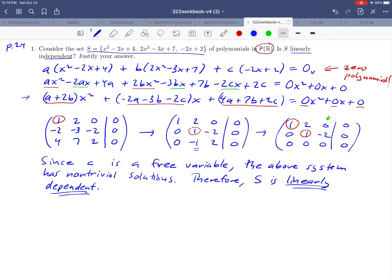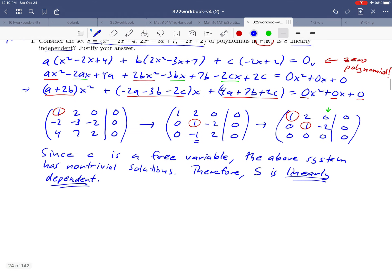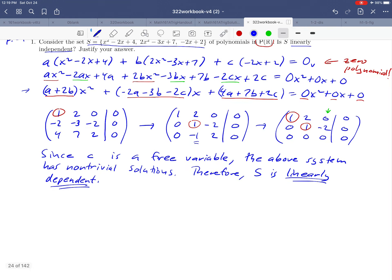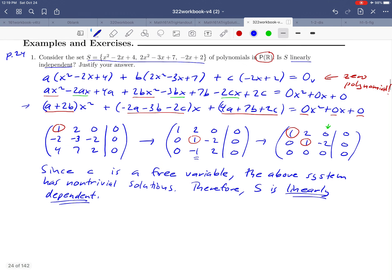There's the answer to our question. I'd like to go a little bit deeper into this, though, even though they didn't ask us this. If s is really a linearly dependent set, what does that mean again? Well, linear dependence means that it should be possible to take one of the polynomials in our set s and write it as a linear combination of the other two. I'd like to see if we can do that using the calculations that we did. So in other words, there should be a dependence relation that we can find.